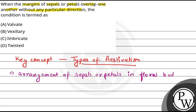There are four types of aestivation. The first one is valvate aestivation. In valvate aestivation, the sepals and petals just touch each other at the margins in the floral bud without any overlapping.